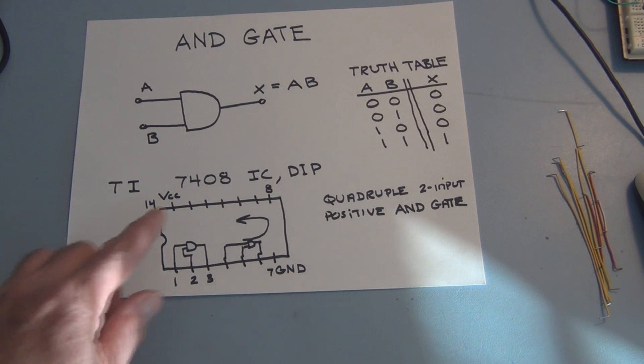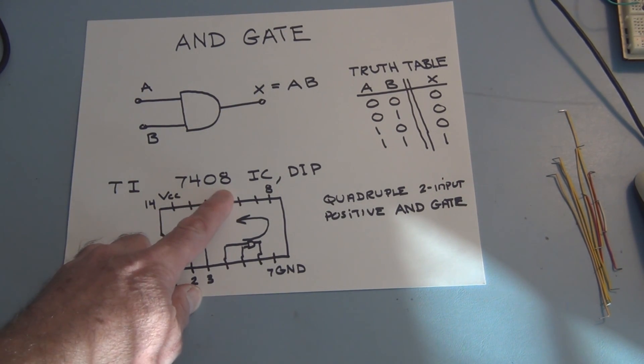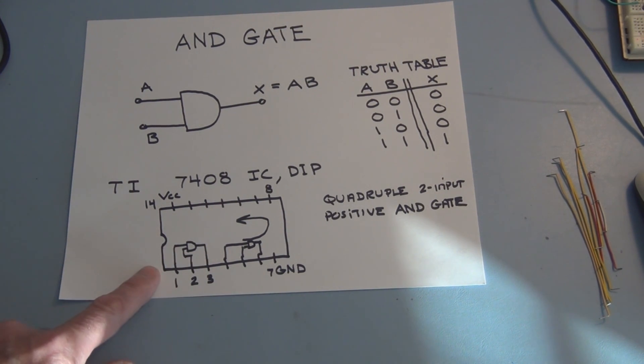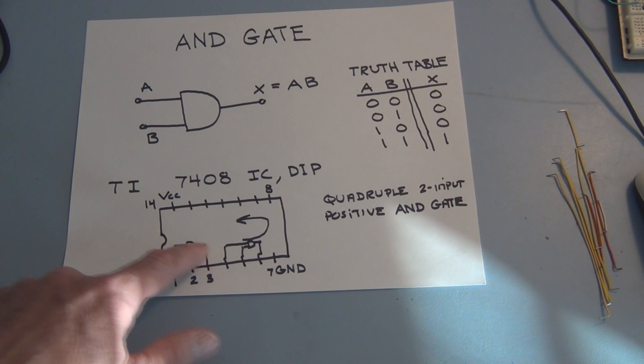It's identified as a 7408, and it is a quadruple two-input positive AND gate, meaning there are four basic two-input AND gates inside that package.